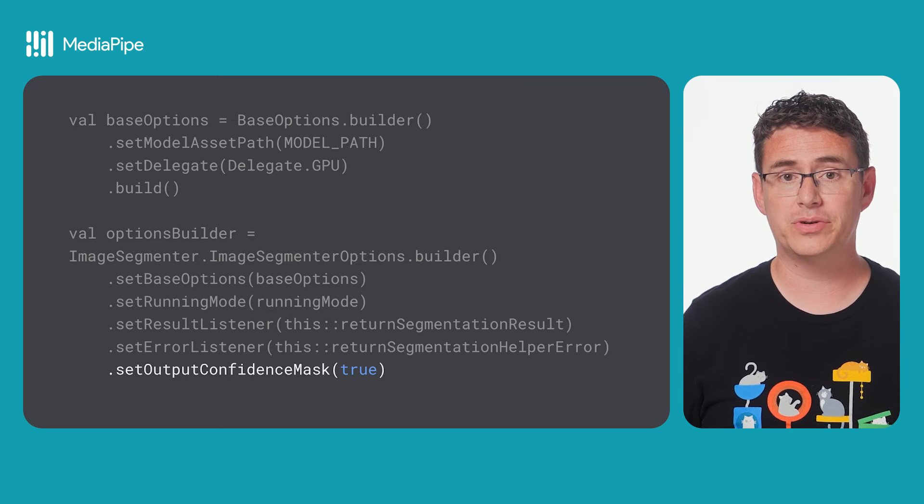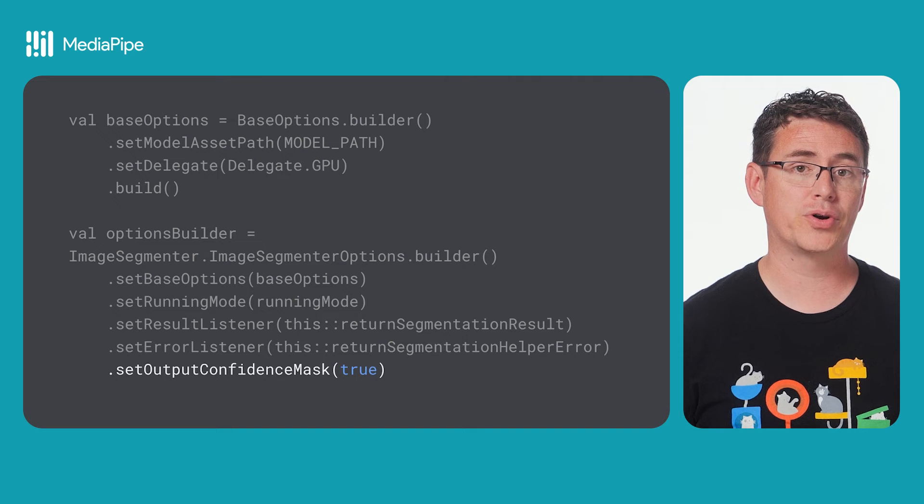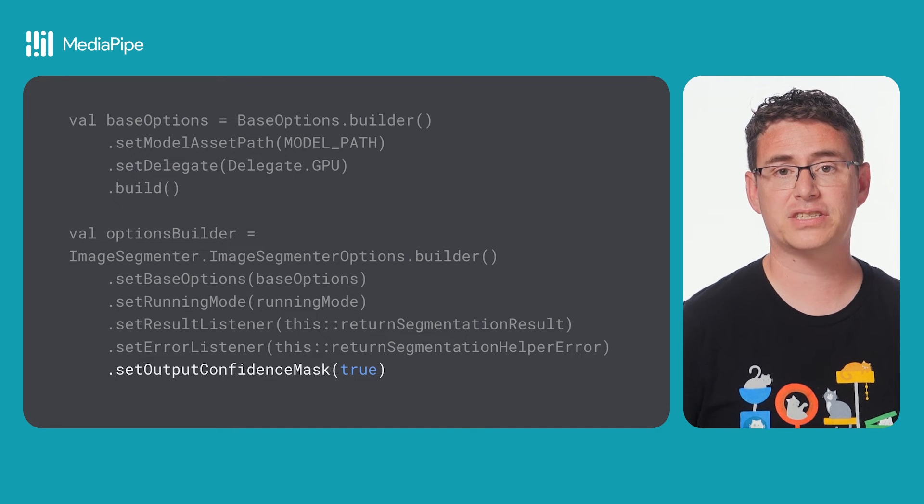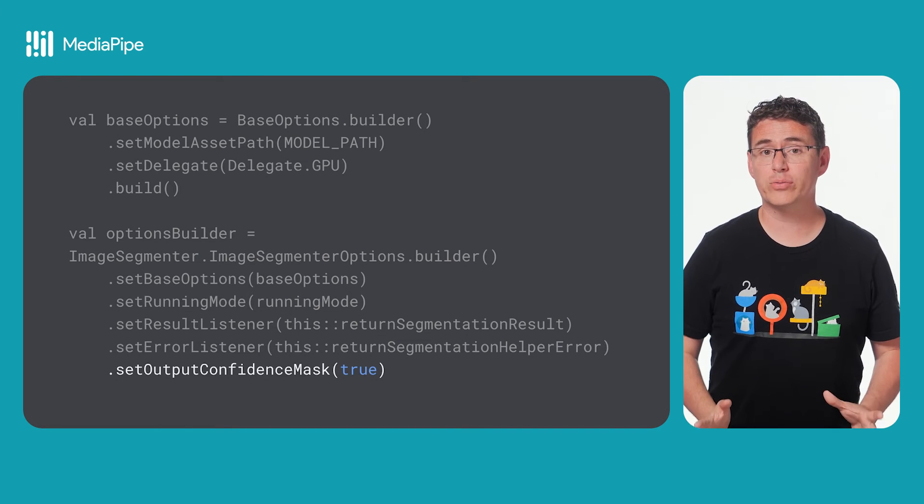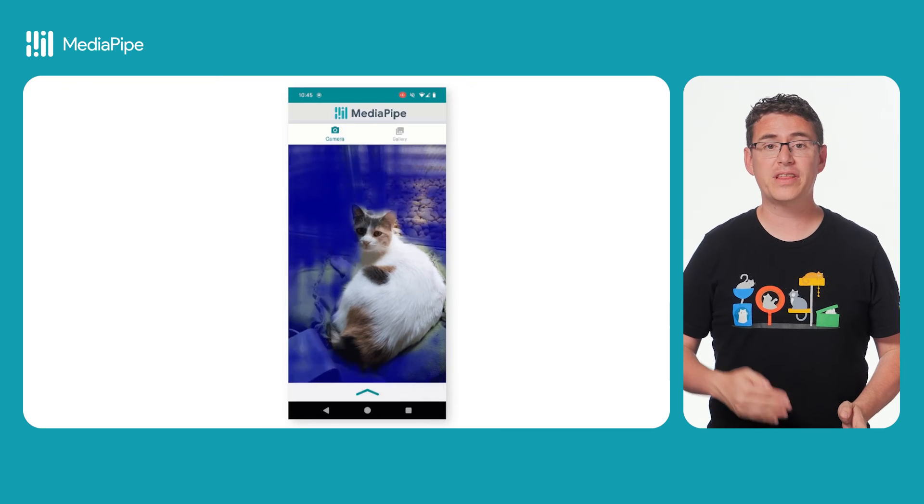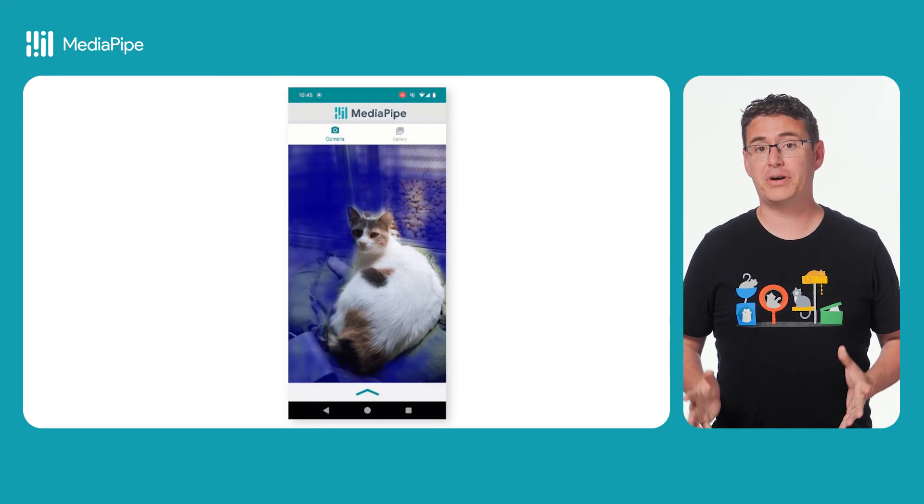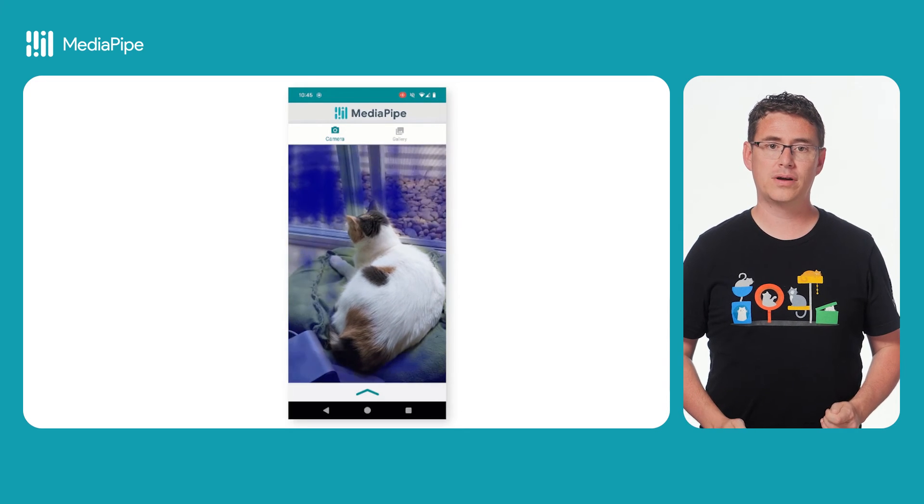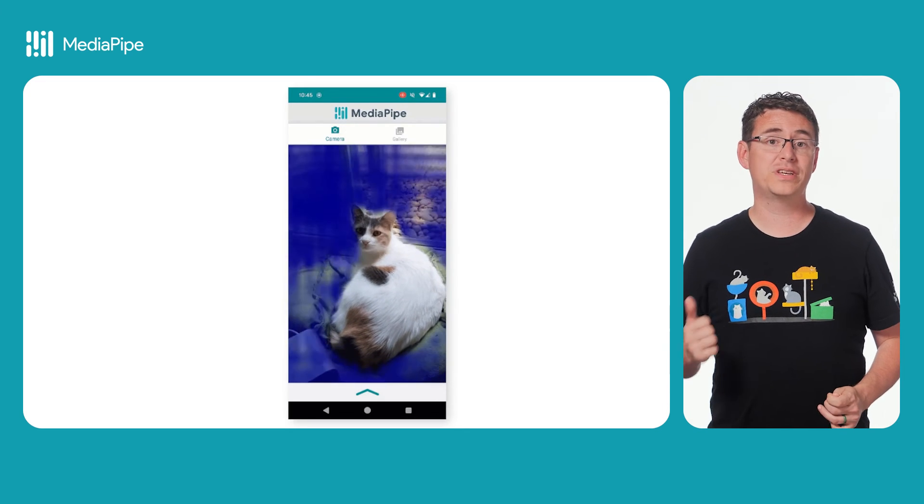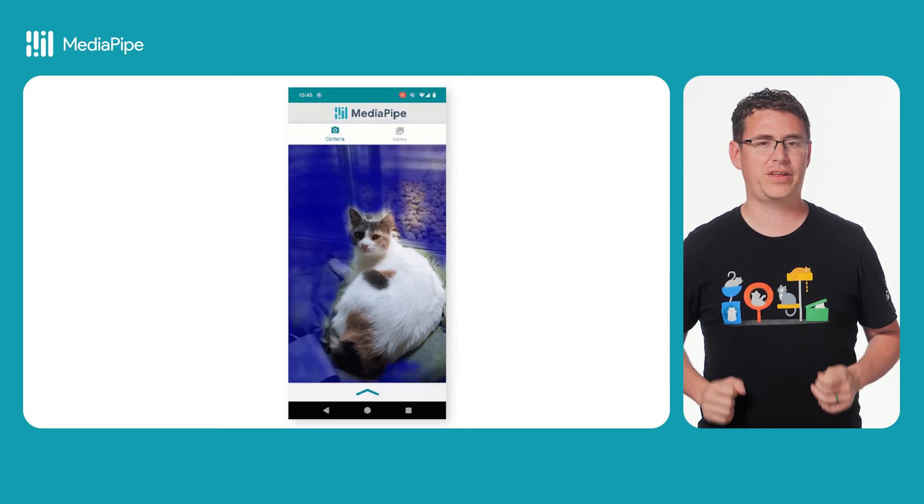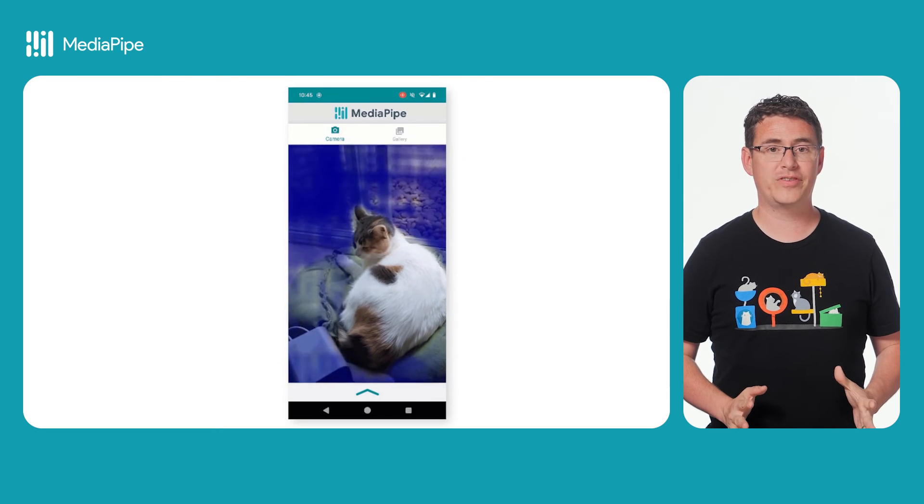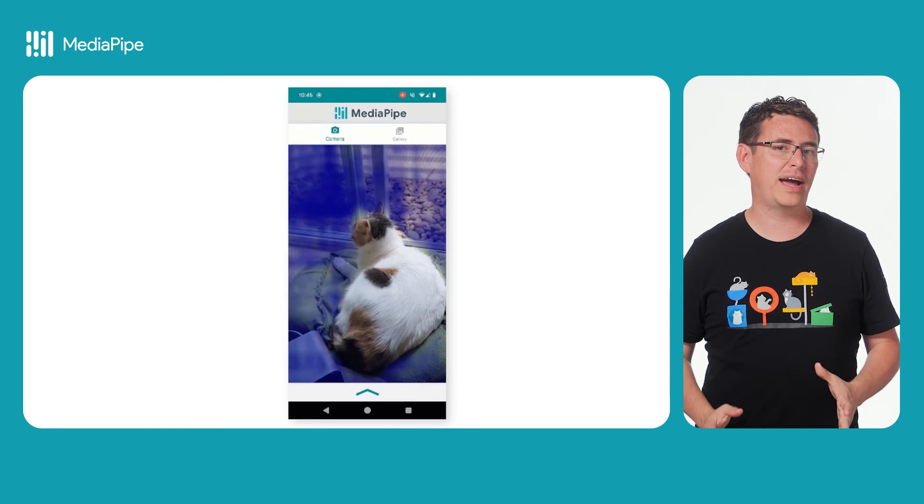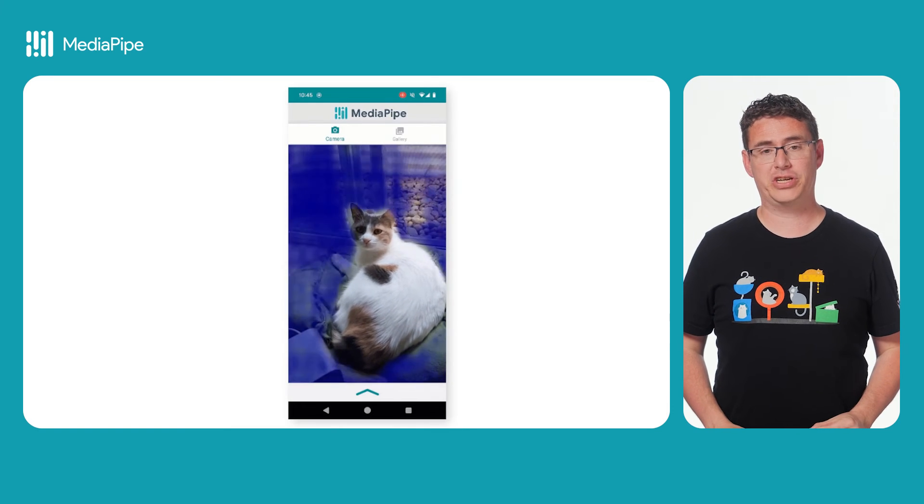The main thing you'll need to do to set this up is to tell your options builder that you want to use a confidence mask during setup. After receiving the results in my example, I will display them over the camera stream UI by changing the transparency of each pixel to match the confidence score. Here you can see an example where this cat comes through as very confidently a cat. Then the rest of the camera view is somewhat covered since there isn't a high confidence in any sort of classification.